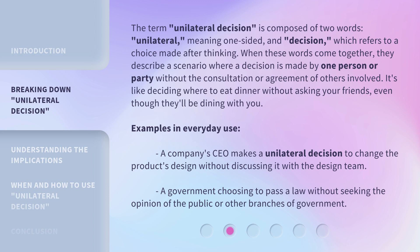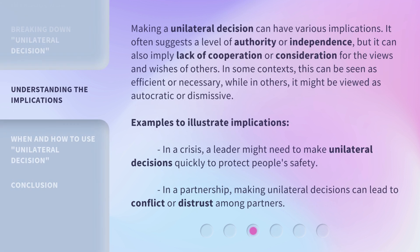Examples in everyday use. Making a unilateral decision can have various implications. It often suggests a level of authority or independence, but it can also imply a lack of cooperation or consideration for the views and wishes of others. In some contexts, this can be seen as efficient or necessary, while in others, it might be viewed as autocratic or dismissive.